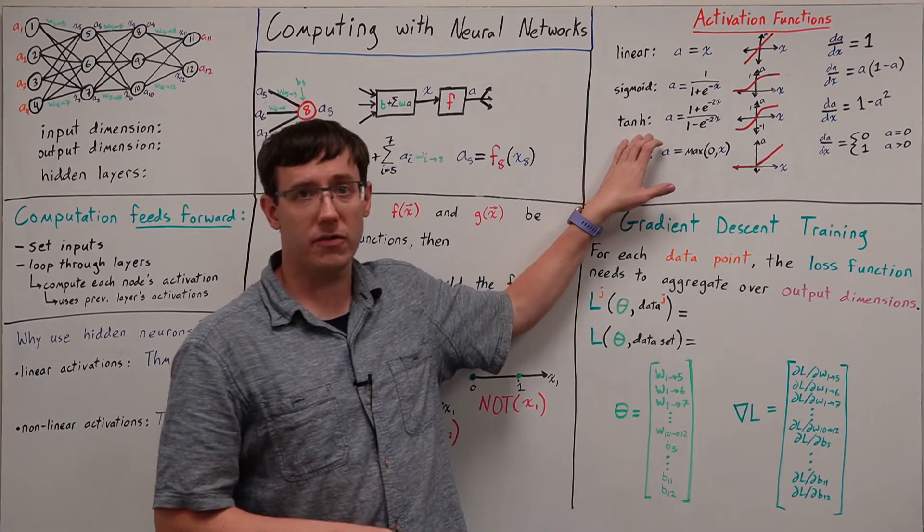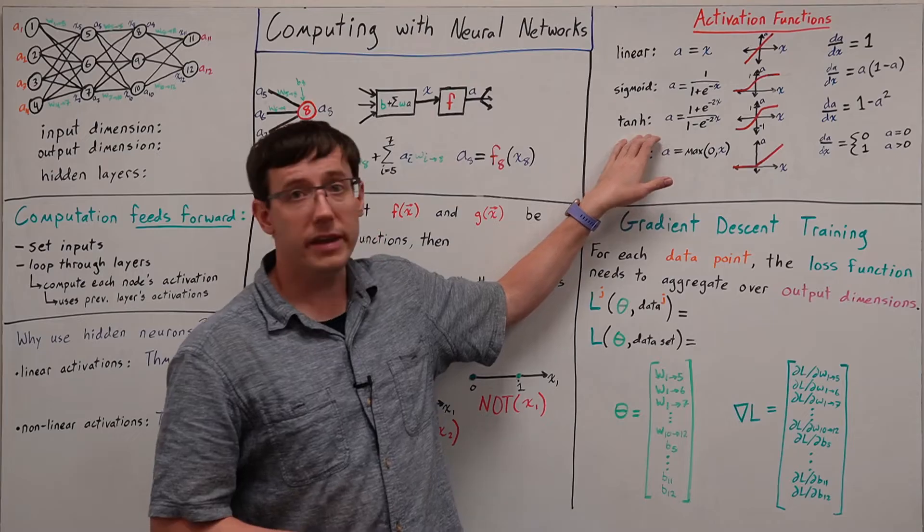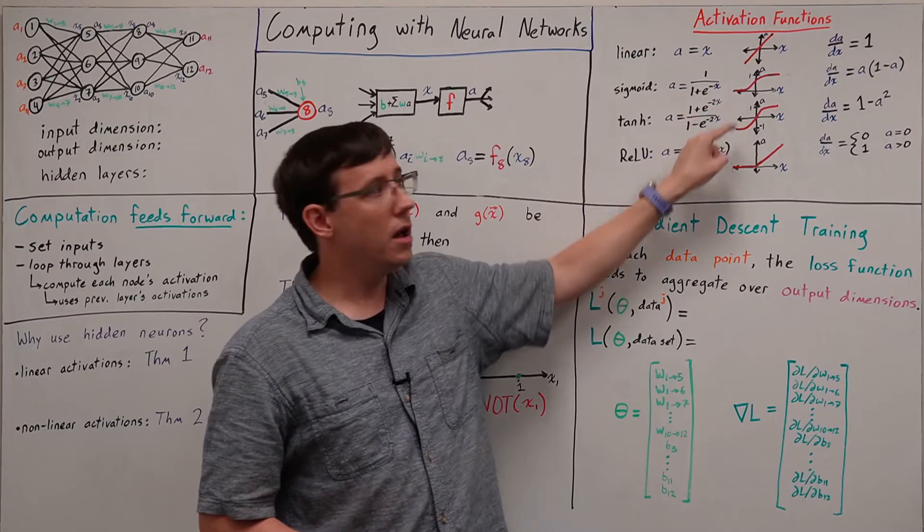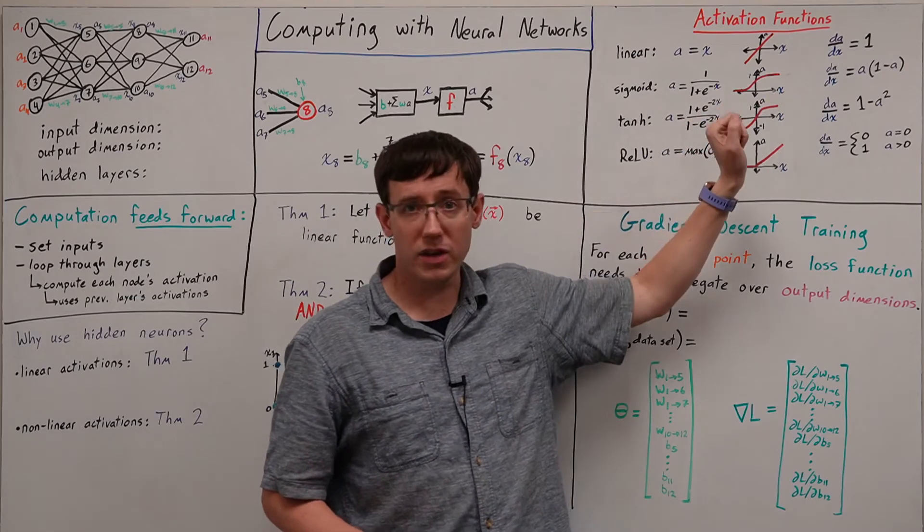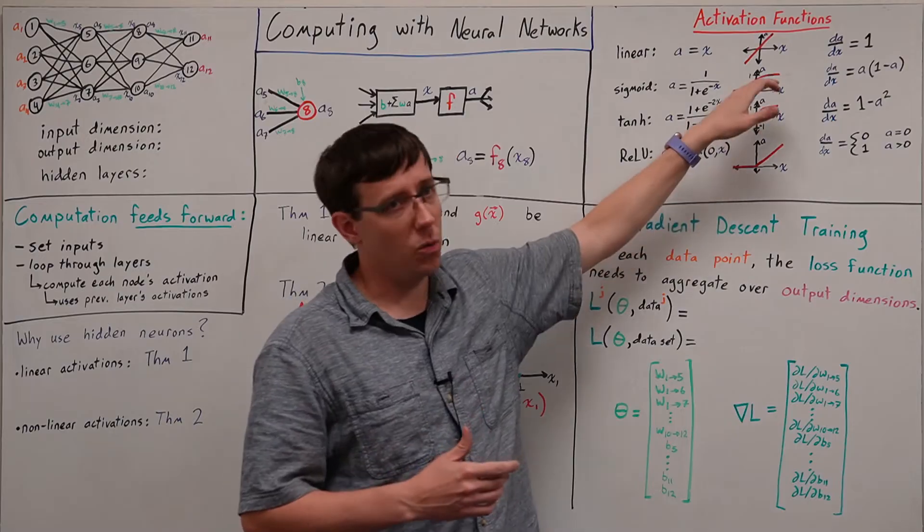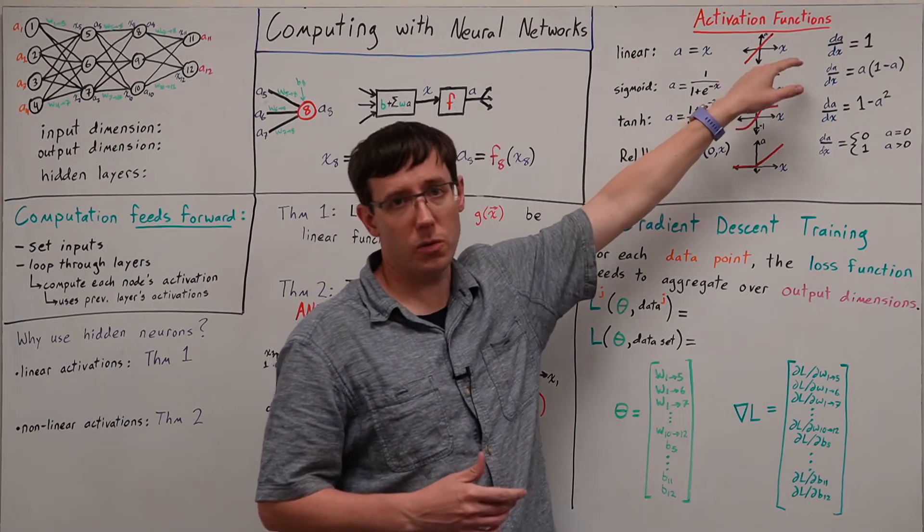And two of the most common additional activation functions are the hyperbolic tangent, which behaves much like the sigmoid, smoothly approximating a step function, but in this case the outputs range from minus 1 to 1 instead of just 0 to 1.